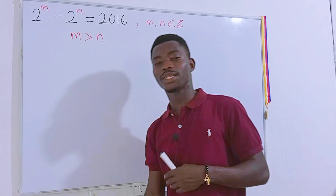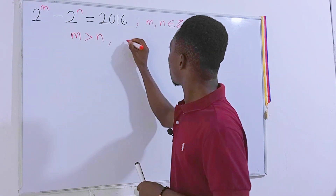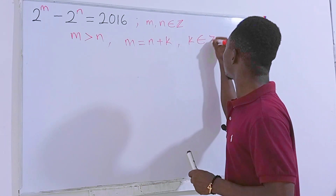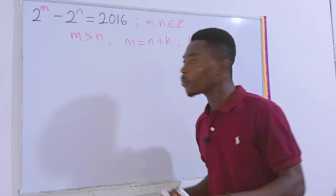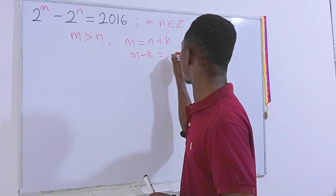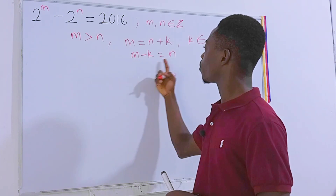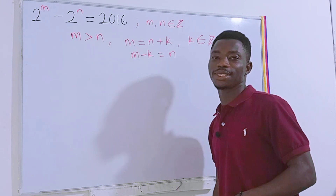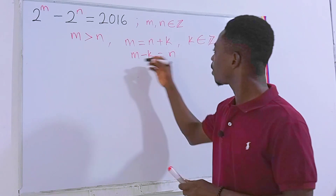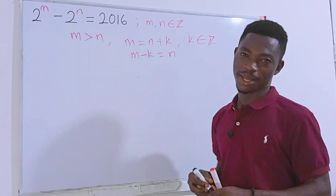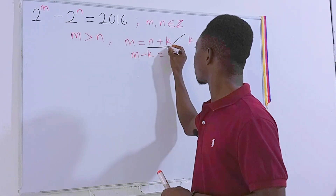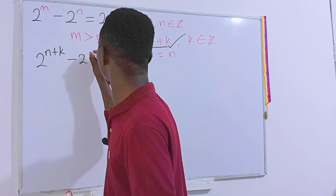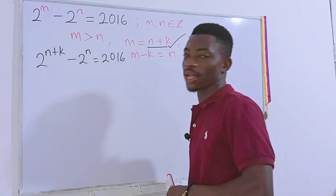The question is: how can we relate m to n? We can write a simple equation — m will equal n plus some constant k, where k is also an integer. Equivalently, m minus k equals n. Now, wherever we see m, we substitute n plus k, giving us 2 to the power (n plus k) minus 2 to the power n, equal to 2016.